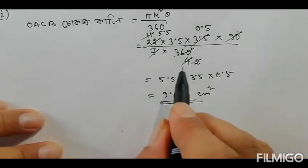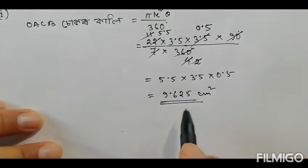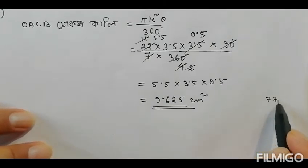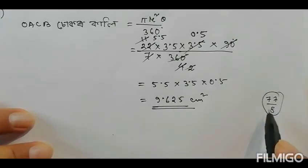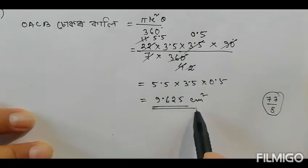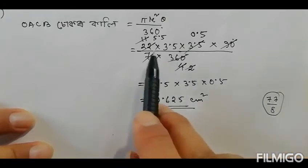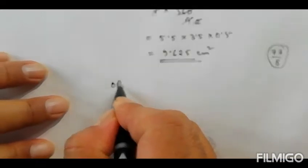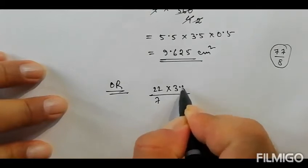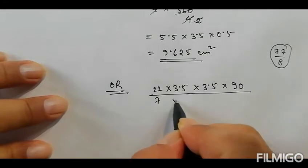The answer is 9.625 centimeter square, which is 77 by 8. To verify: 22 by 7 times 3.5 times 3.5, with 90 over 360. We simplify step by step — 7 into 2 gives us 11, and 3.5 times 3.5 leads to 77 by 8 equals 9.625.